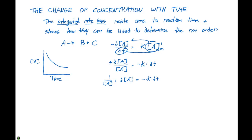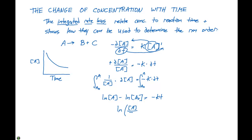What we want to do now is integrate each side. Taking the integral from A-naught to A of both sides, the integral of one over A is the natural log of A. Arranging that gives us: ln[A] minus ln[A₀] equals negative K times t. Rearranging to match the first order integrated rate law seen in textbooks: ln[A] divided by ln[A₀] equals negative Kt.